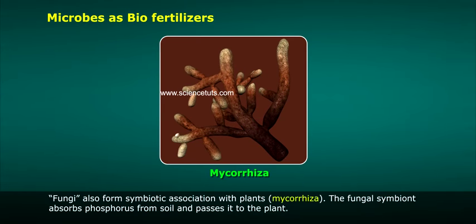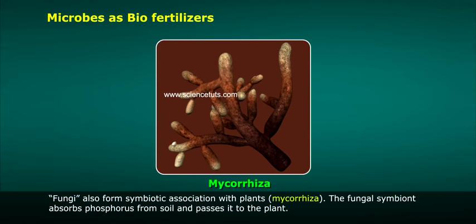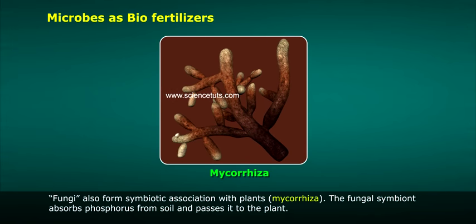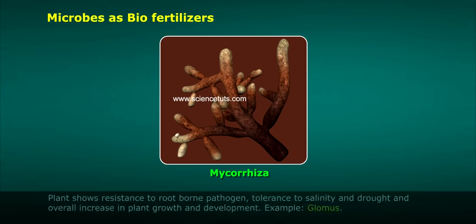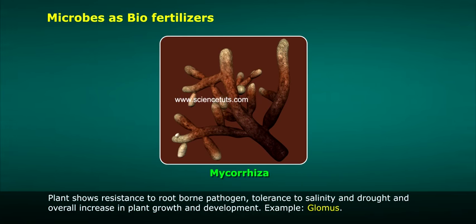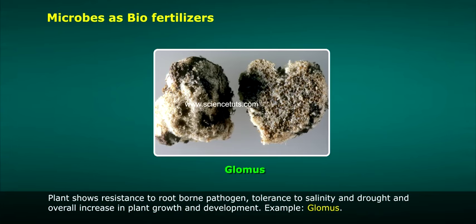Fungi also form symbiotic associations with plants, known as Mycorrhiza. The fungal symbiont absorbs phosphorus from the soil and passes it to the plant. The plant shows resistance to root-borne pathogens, tolerance to salinity and drought, and an overall increase in plant growth and development. An example is Glomus.